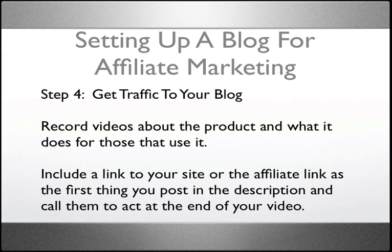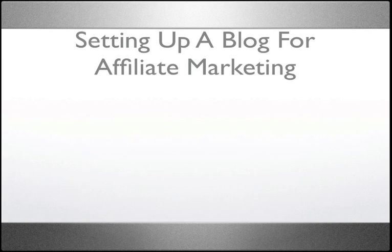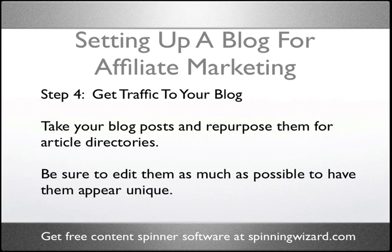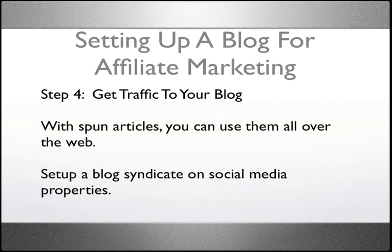Record videos about the product and what it does for those that use it. Include a link to your site or the affiliate link as the first thing you post in the description and call them to act at the end of your video. I'm using Keynote and ScreenFlow on my Mac, but you can use Camtasia and PowerPoint on a PC. Take your blog posts and repurpose them for article directories. Be sure to edit them as much as possible to appear unique in the eyes of Google. The easiest way to do this is to spin your content — I have a content spinner software I give away for free at spinningwizard.com. With spun articles, you can use them all over the web.